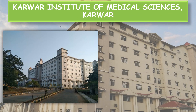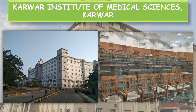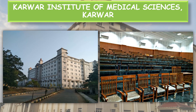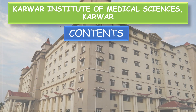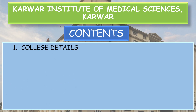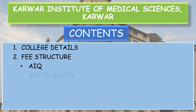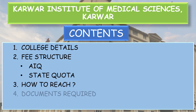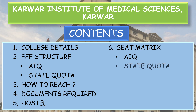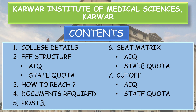First of all, coming through some pictures. Now, coming to the contents of the video. The contents discussed here are college details, the general details of the college or the hospital details. Then the fee structure — the complete fee structure for KA allotted students and All India quota allotted students or the MCC allotments. Then how to reach the college, documents required and hostel facility, even the fee structure of the hostel, seat matrix — the complete seat matrix of All India quota and of the state quota — and cutoff of All India quota. So let's begin.